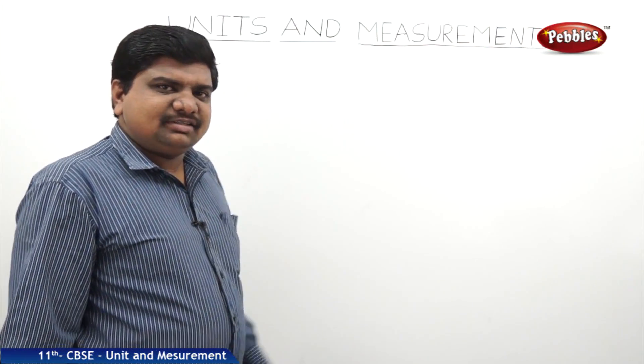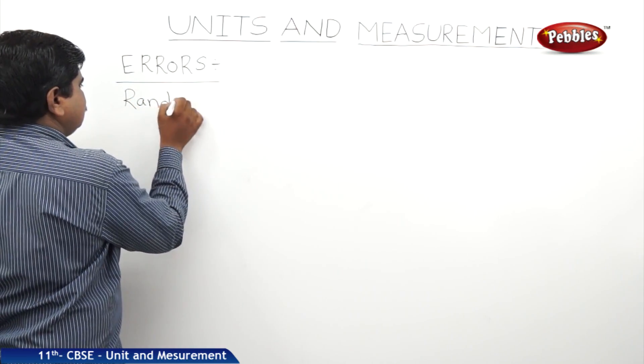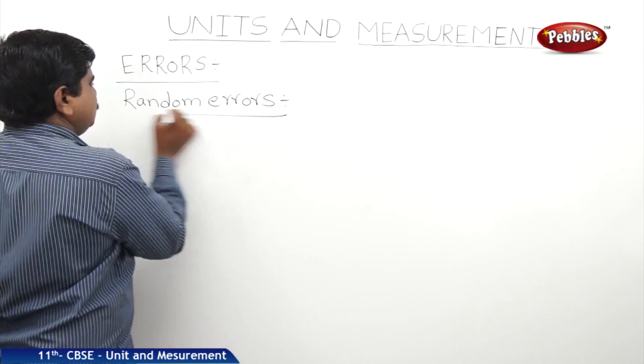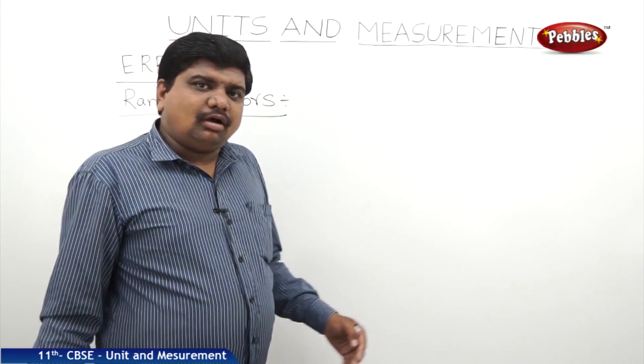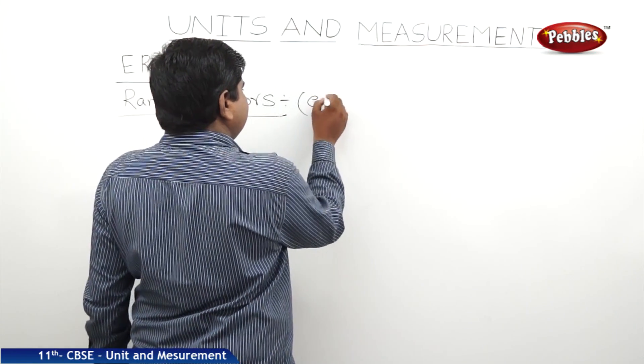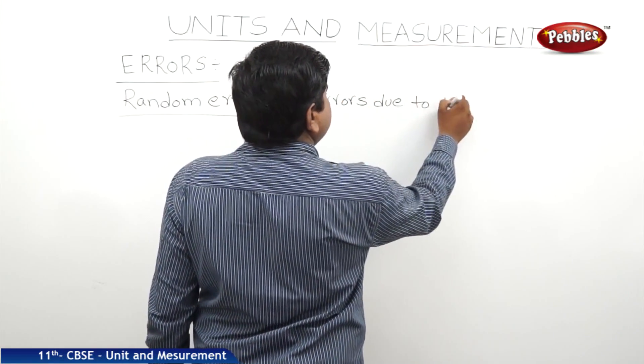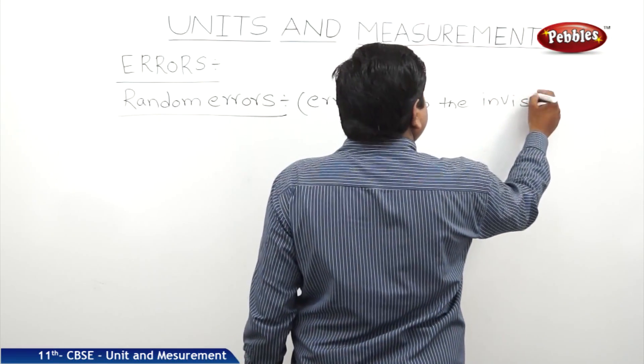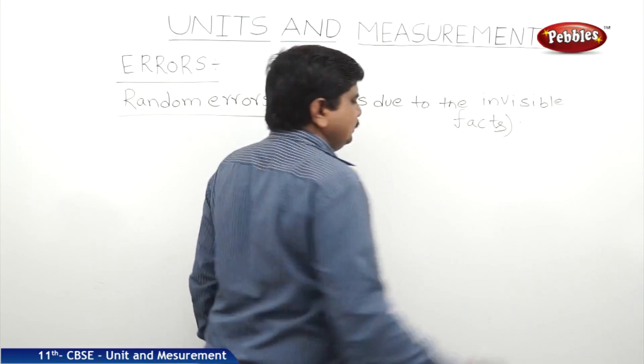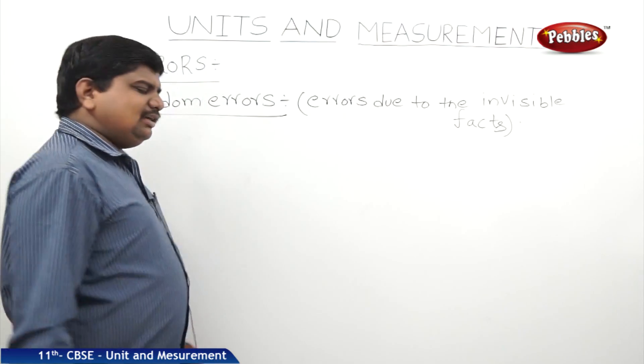The next sub-classification of error is random errors. These random errors are also called errors due to invisible factors. Randomness means no regularity in order. So what is the meaning of this random error?